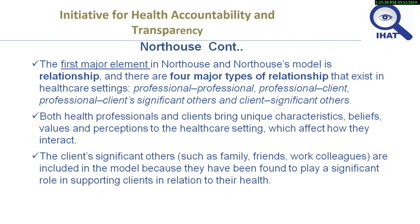The first major element in the model is relationship. There are four different types of relationships in healthcare settings: professional to professional, professional to client or patient, professional to significant others, and interaction between the client and significant others. Both health professionals and clients bring unique characteristics, beliefs, values, and perceptions to healthcare settings which affect how they interact. The client's significant others — such as family members, friends, and work colleagues — are included in the model because they play a significant role in supporting patients in relation to their health.